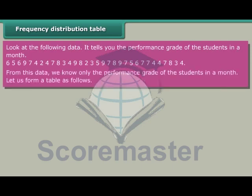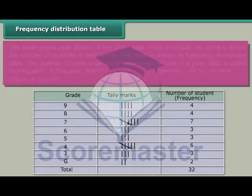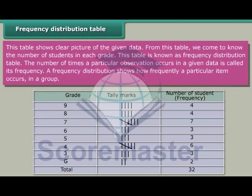From this data, we know only the performance grade of the students in a month. Let us form a table. This table shows a clear picture of the given data. From this table, we come to know the number of students in each grade. This table is known as a frequency distribution table. The number of times a particular observation occurs in a given data is called its frequency. A frequency distribution shows how frequently a particular item occurs in a group.